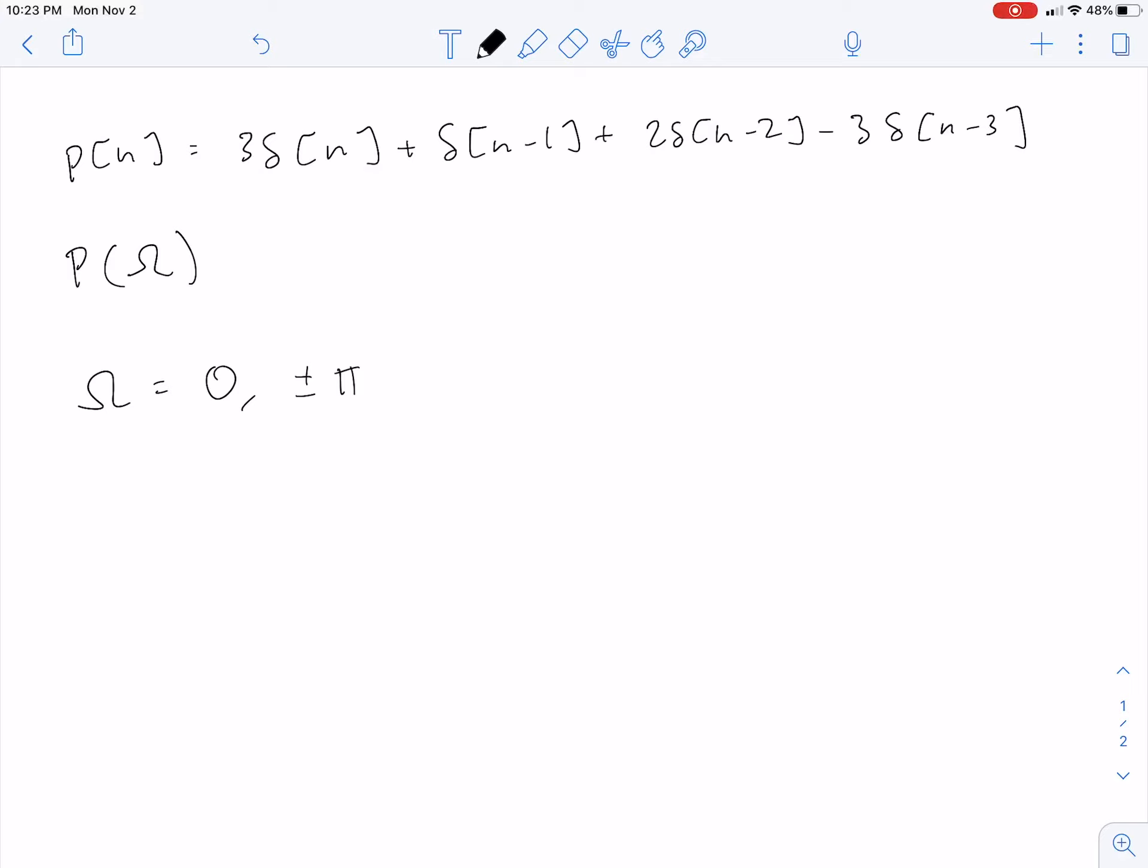This is because at omega equals zero and plus or minus pi, your DTFT is going to be completely real, there's going to be no imaginary components.